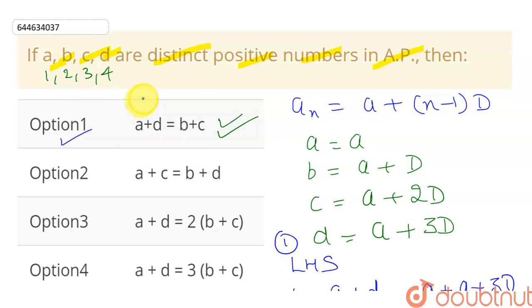If I check this option through these values, we can also come to our answer. See, a plus d will be 1 plus 4, which is 5. b plus c: b is 2, c is 3, so this is giving me 5. So 5 equals 5, so this will be true. Now let's check other options as well. a plus c: a is 1, c is 3, giving 4. b plus d: b is 2, d is 4, giving 6. So this option is incorrect.